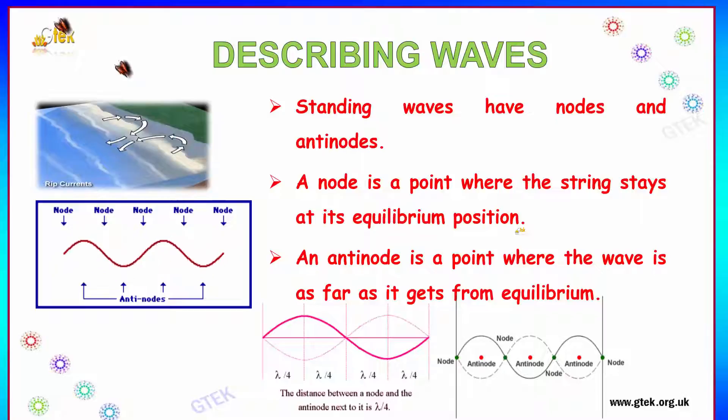We shall see about describing waves. Standing waves have nodes and antinodes. A node is a point where the string stays at its equilibrium position. Whereas, an antinode is a point where the wave is as far as it gets from equilibrium.